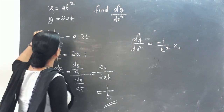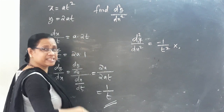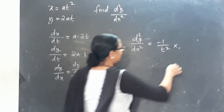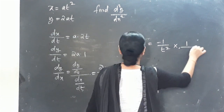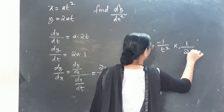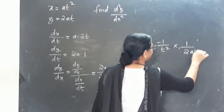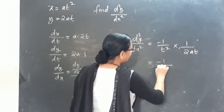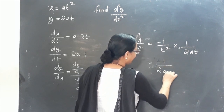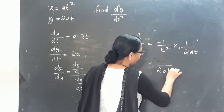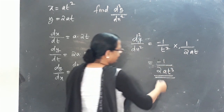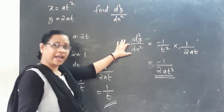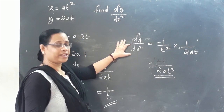Since we are differentiating with respect to x, we multiply by the reciprocal of dx by dt, which is 1 by 2at. Therefore d²y by dx² equals minus 1 by t² multiplied by 1 by 2at, giving minus 1 by 2at³.